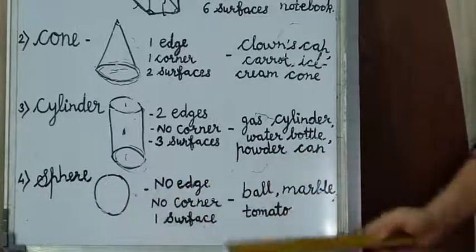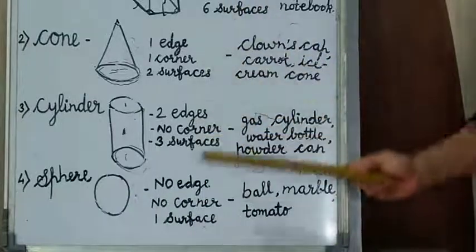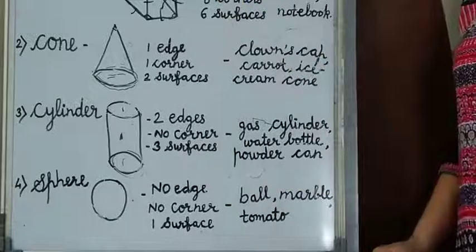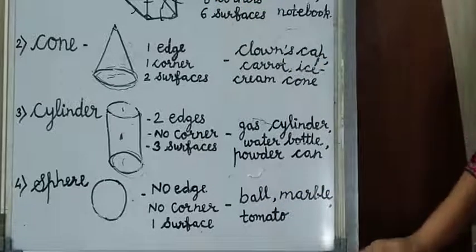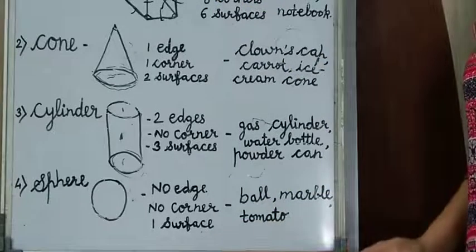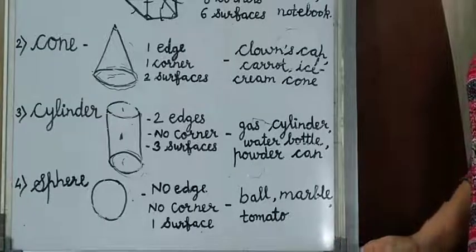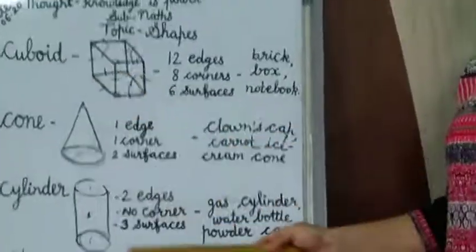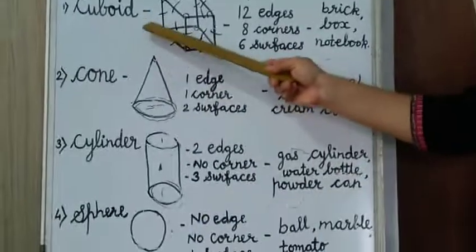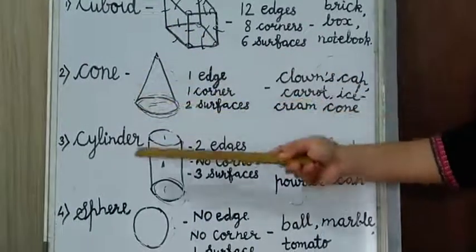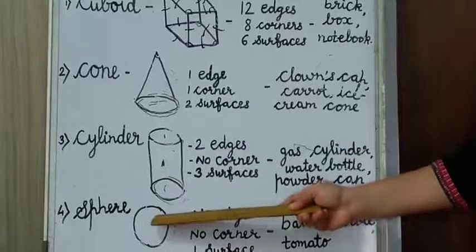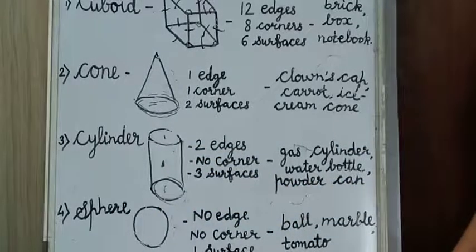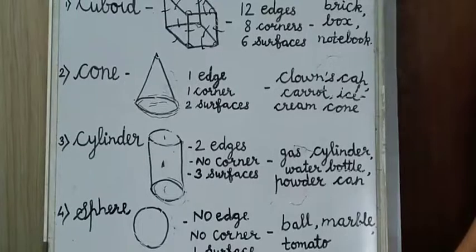So, I hope, children, you got our today's lesson about the four shapes. Last year you learned triangle, square, rectangle, circle. But this year you have learned four new shapes — cuboid, cone, cylinder and sphere. So, now let's go on our maths textbook.